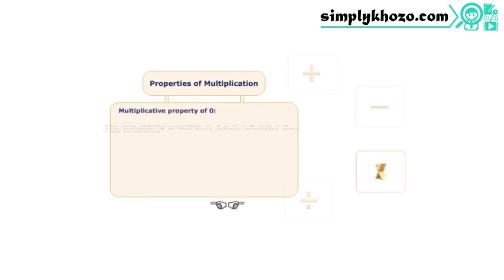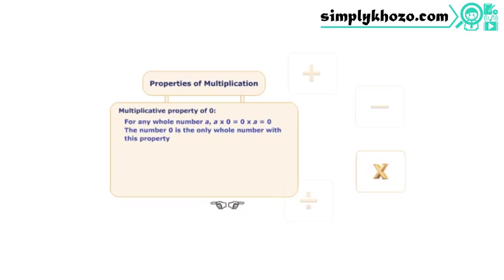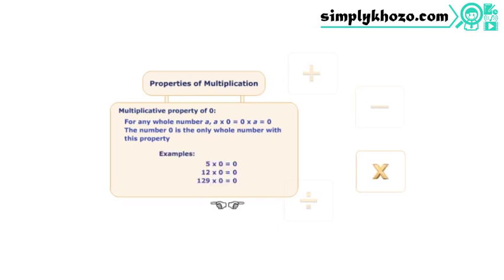The number zero has a special property in relation to the multiplication process. When any whole number is multiplied with zero, the result is always zero.